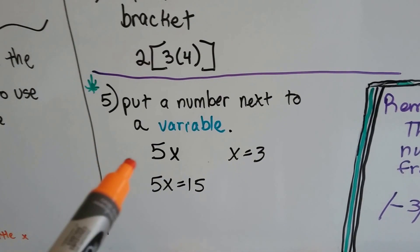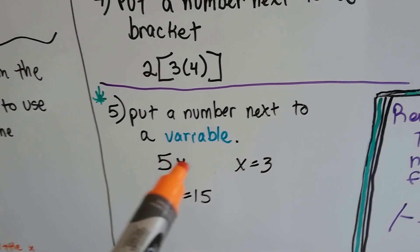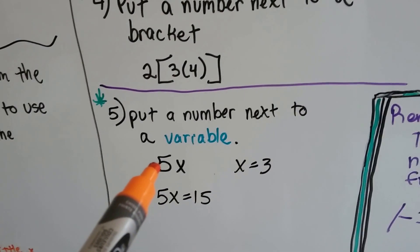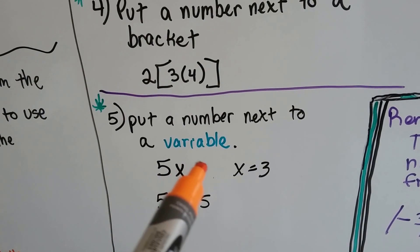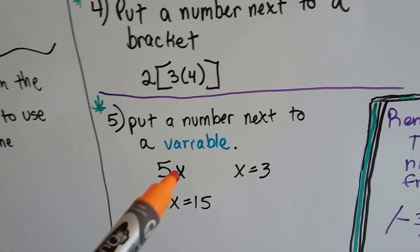The other way is, and this is a biggie, you're going to see it next to a variable. That means to multiply. Now, this looks like five times something, but that's exactly what it does mean. It means five times x.